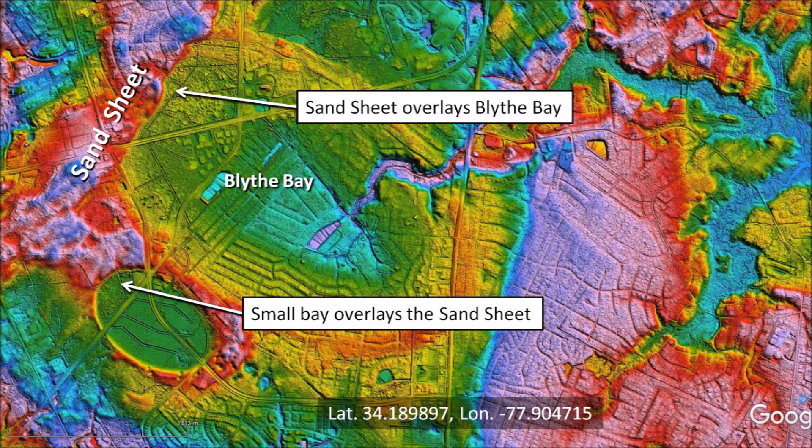The sand sheet overlays Blythe Bay, which means that Blythe Bay formed before the sand sheet was deposited. However, the rim of the small bay neatly trims the sand sheet, meaning that the small bay was created after the sand sheet was deposited. This analysis would not be possible without LiDAR.